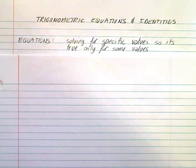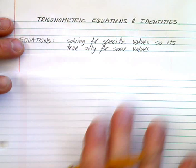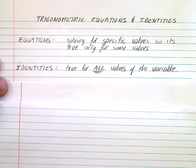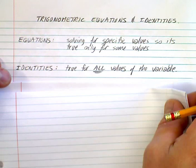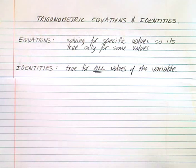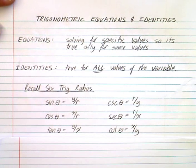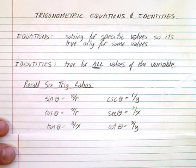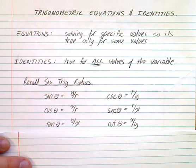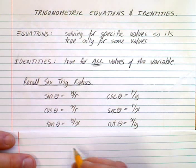There are certain things that are true for every possible value — this is what we call an identity. An identity is something that is true for everything. I'm going to introduce the basic six trig ratios that we've dealt with in the past. We need to understand where these come from.